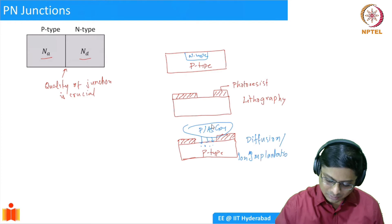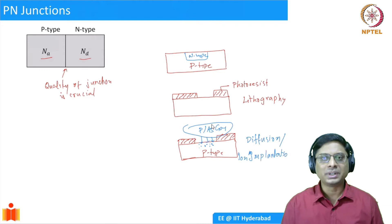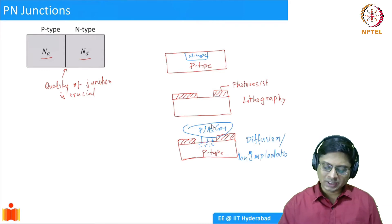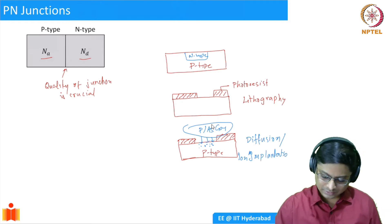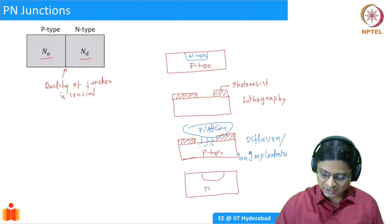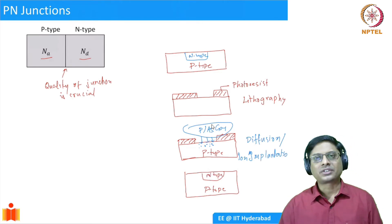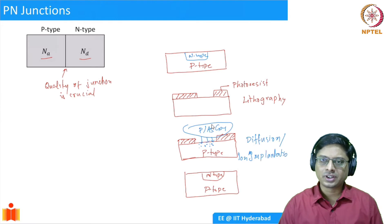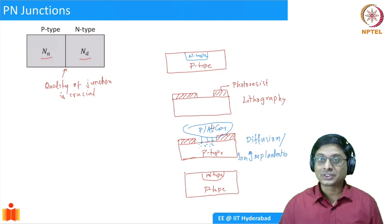After the diffusion or implantation, we simply remove the photoresist. What you will be left with is a structure having a p-type region with an n-type region inside it — that's how we actually realize a p-n junction. If you are paying attention, you might recognize that we did what is called compensatory doping, which we mentioned last week.